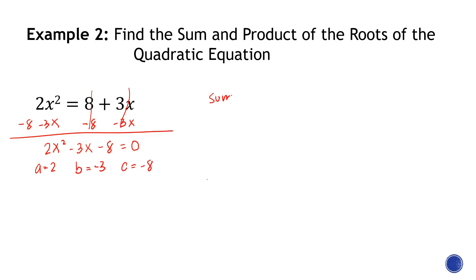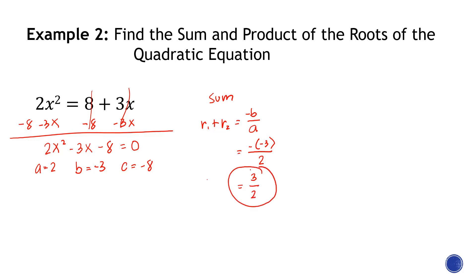For the sum of the roots, r1 + r2 = −b/a. We don't know the two roots individually, but the formula is what's important. So we get −(−3) over 2, which equals 3/2. That's the answer for the sum.